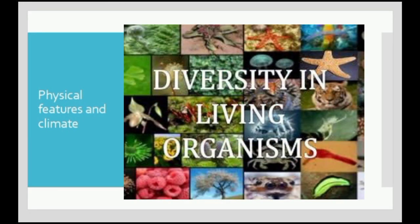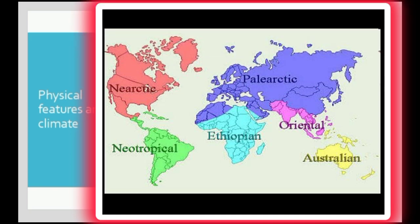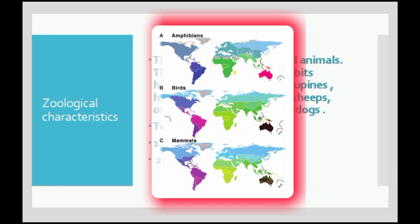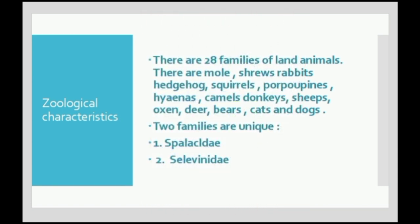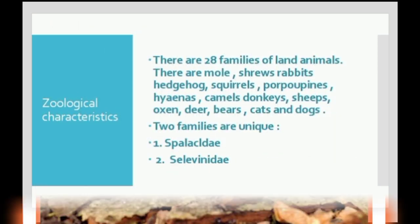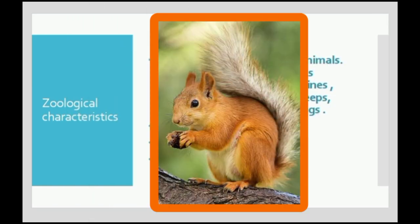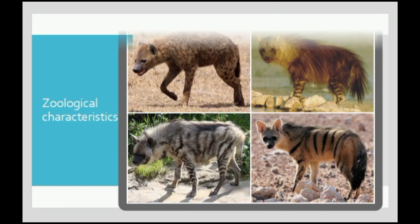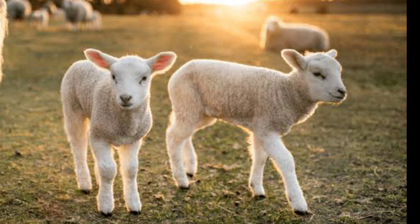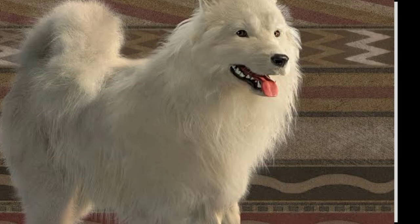Greater diversity of surface features is also characteristic of this region. For zoological characteristics, there are 28 families of land animals, including moles, shrews, rabbits, hedgehogs, squirrels, porcupines, hyenas, camels, donkeys, sheep, oxen, deer, bears, cats, and dogs.